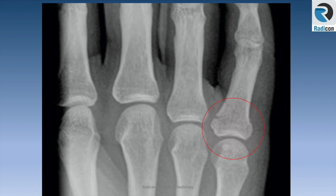In many countries it is normal to call it a 5th proximal phalanx fracture, which is acceptable. However, UK radiologists are generally not familiar with that terminology. The usual way of describing it in the UK would be: fractured base of proximal phalanx of the little finger.